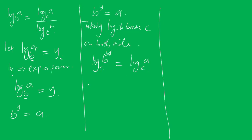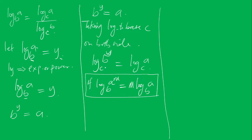Now, using the logarithm power rule — log A base B raised to power M is equal to M times log A base B — this term becomes Y log B base C. So we have Y log B base C is equal to log A base C. Dividing both sides by log B base C to isolate Y.